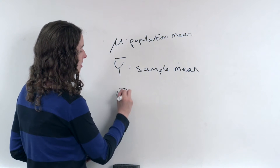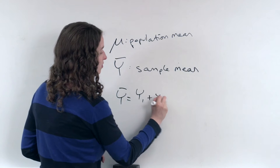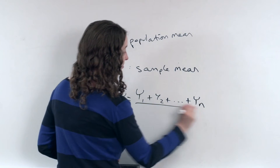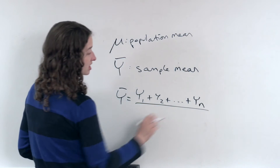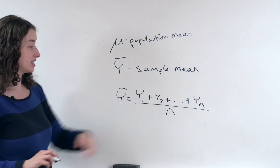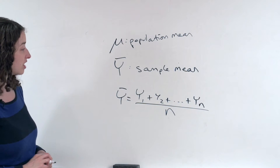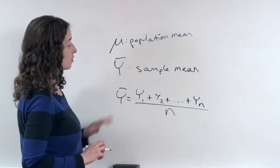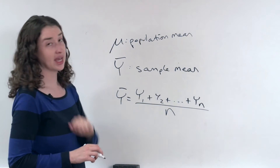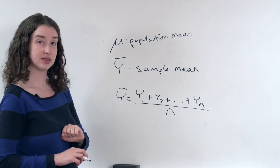In other words, y-bar is equal to y1 plus y2 plus all the values in my sample, all the way up to yn, which is the height of the nth woman, divided by n, and this lower case n refers to the sample size. That's in contrast to mu, where we had to add up all the values in the entire population and divide by capital N, which is the population size as opposed to the sample size.